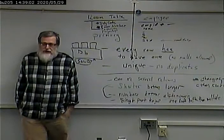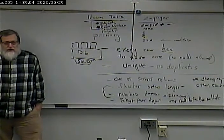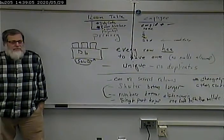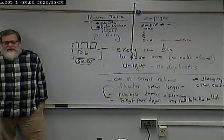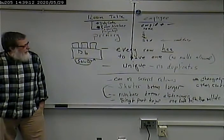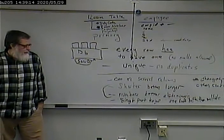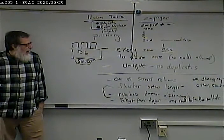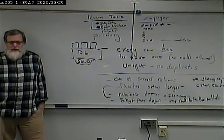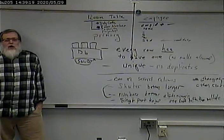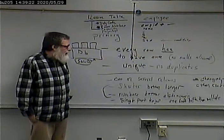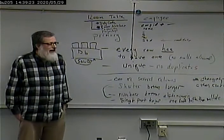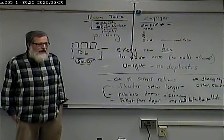Although we've decided not to use social security number as the primary key, we still want the constraints associated with the primary key to apply to that field — every row has to have a value and it has to be unique. In Access, when you define a field you can say whether it's required. To guarantee uniqueness, we create a unique index on that field.